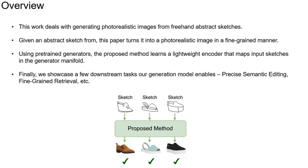In this paper, we propose a high-resolution, fine-grained object image generator framework guided by very abstract freehand sketches. We utilize a pre-trained image generator and learn a task-specific lightweight mapper that maps the input sketches to images present in the pre-trained StyleGAN latent manifold.